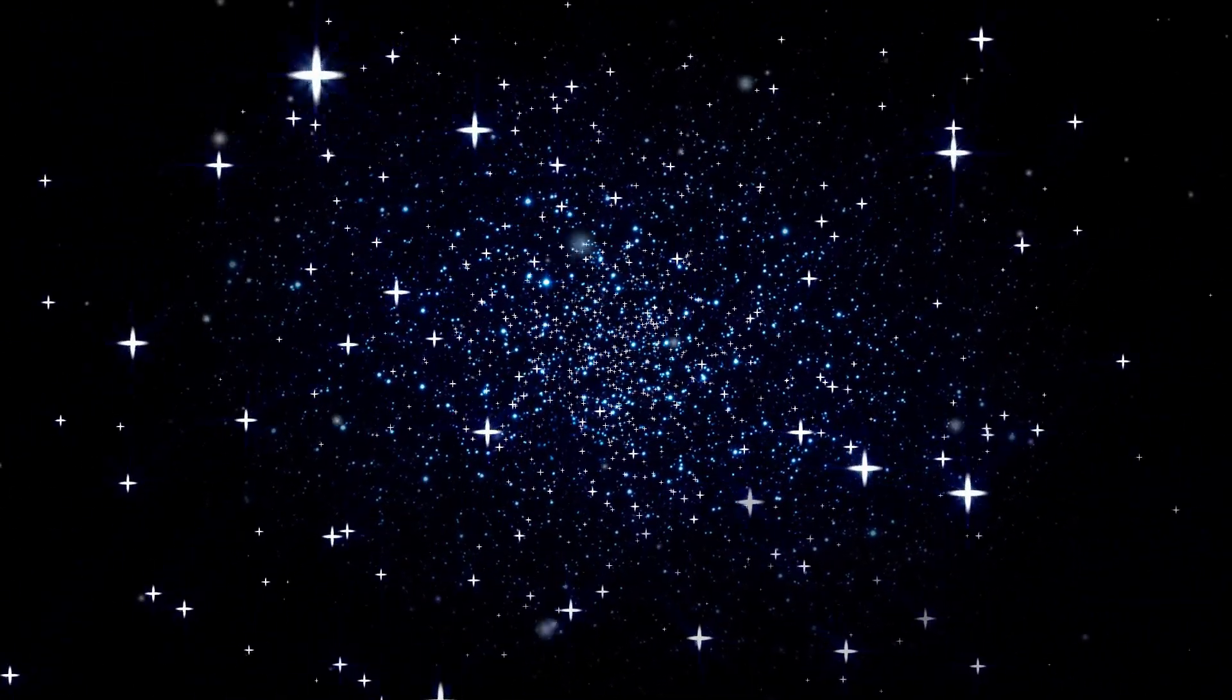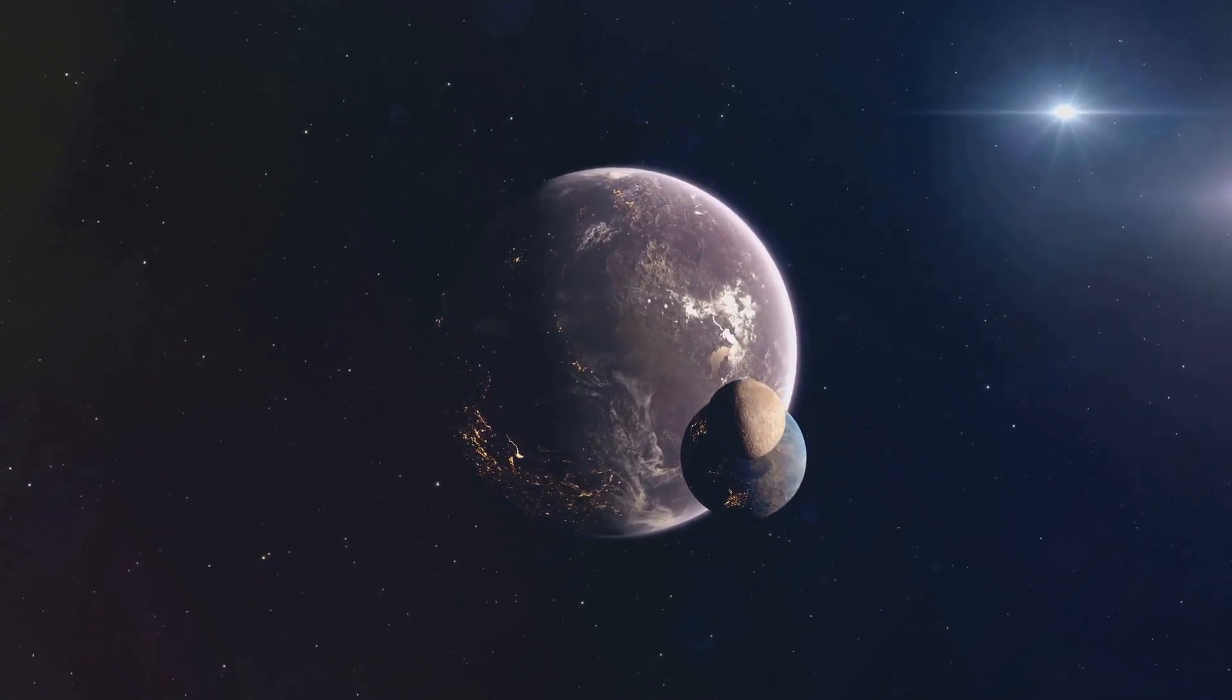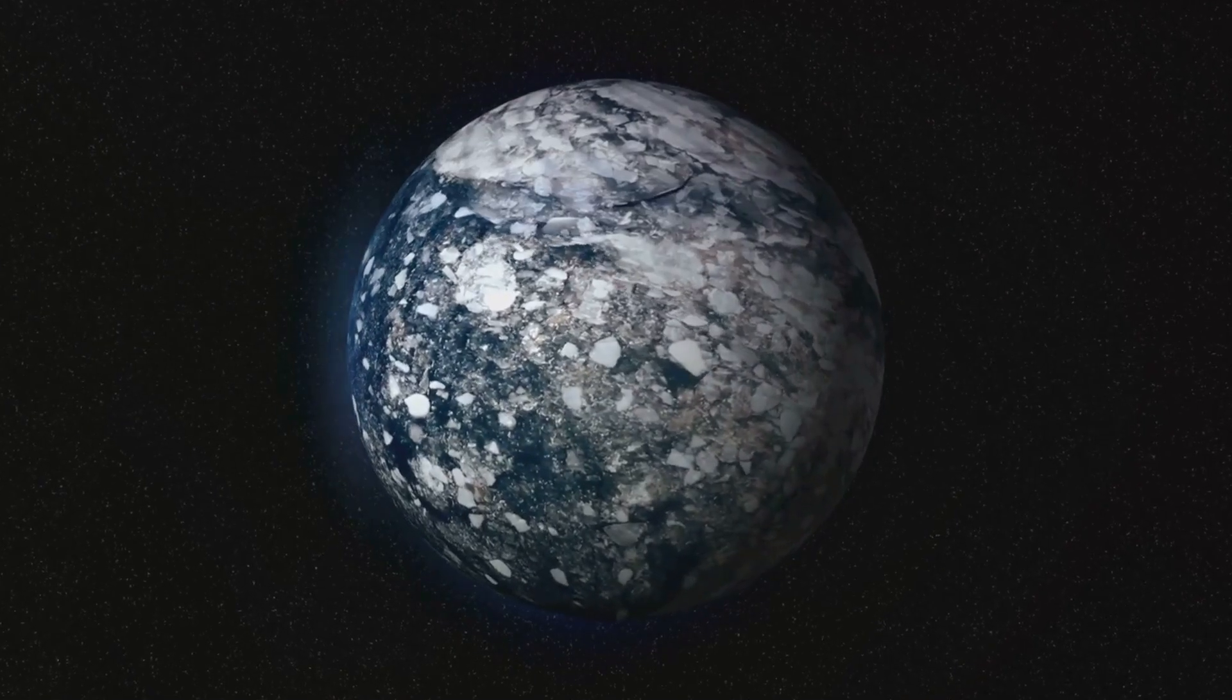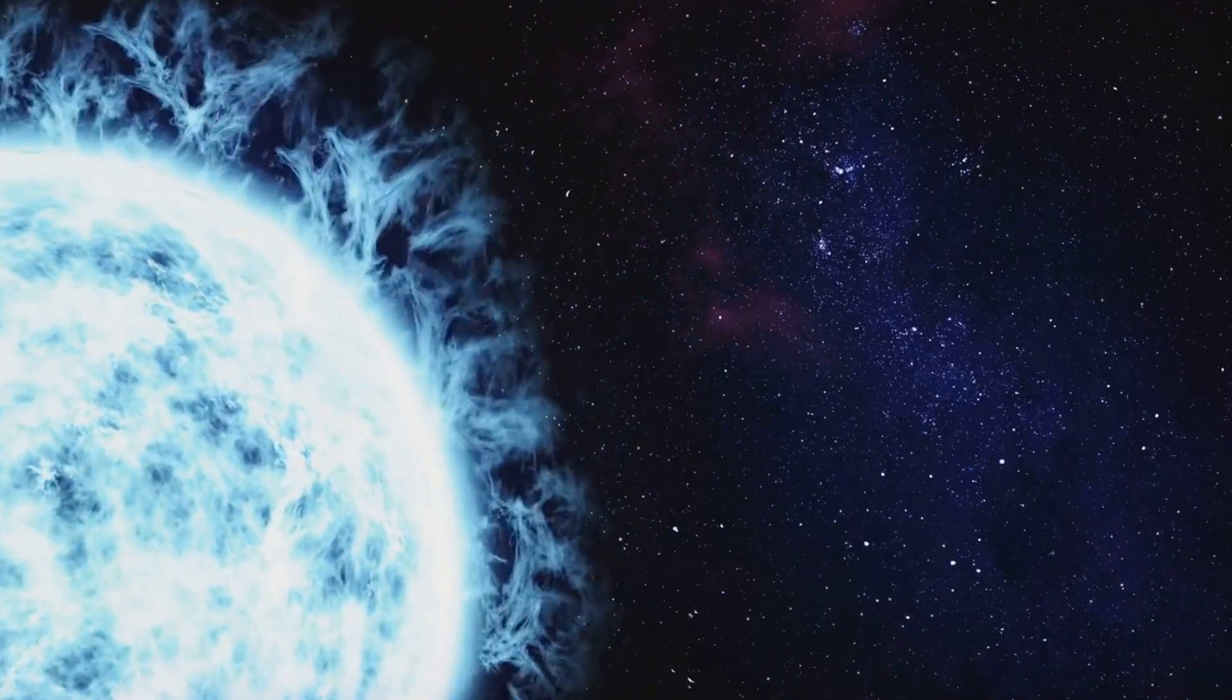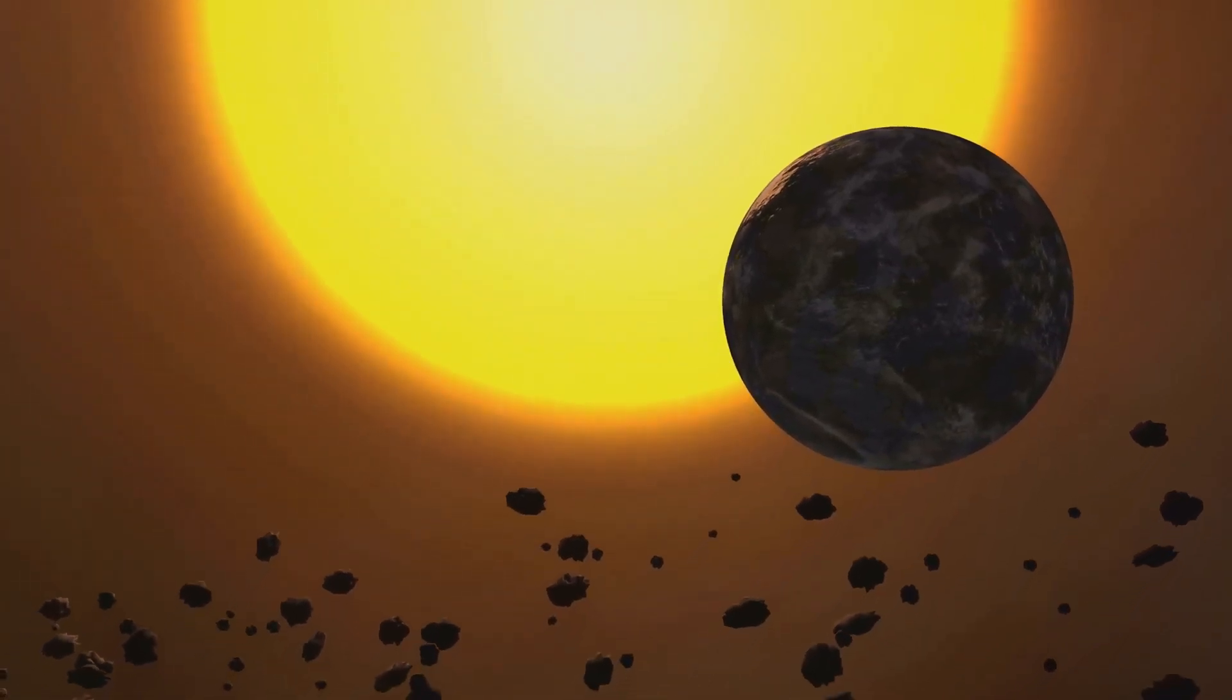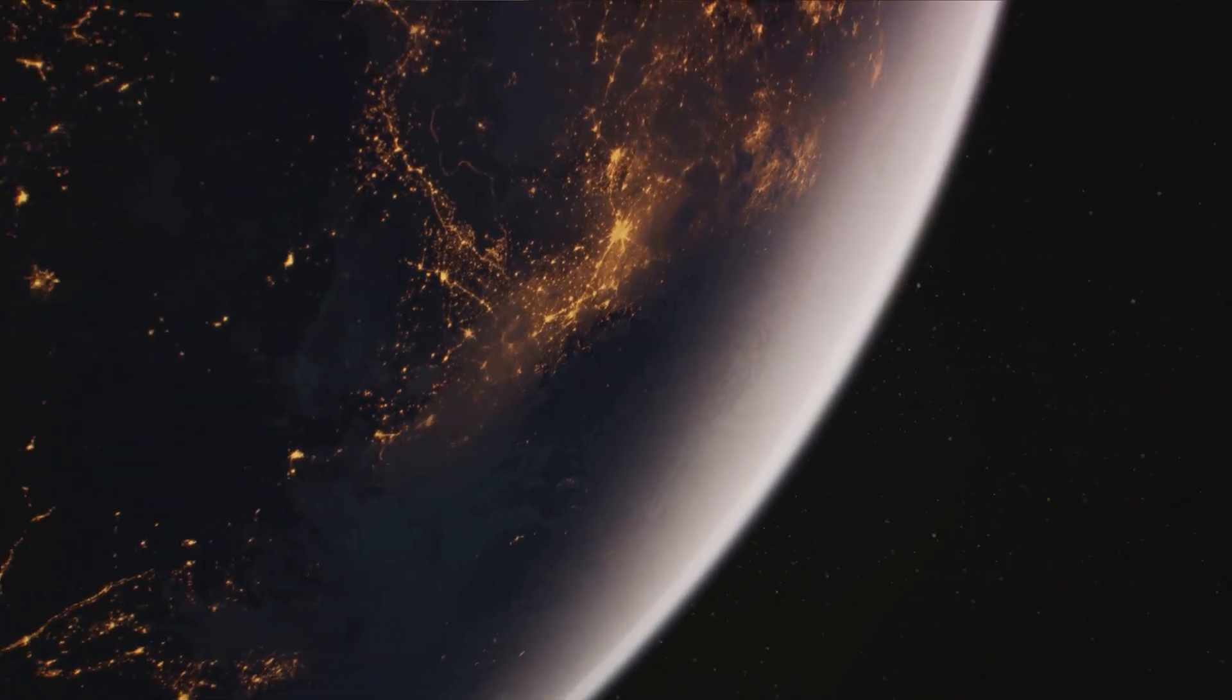But not all planets are created equal. For a planet to support life as we know it, certain conditions must be met. First, it must orbit within its star's habitable zone, the region where temperatures are just right for liquid water to exist. Too close to the star, and any water would evaporate; too far away, and it would freeze. Secondly, the planet needs to have the right kind of atmosphere. This not only provides the air that potential life forms might breathe, but also helps regulate the planet's temperature and protect it from harmful solar radiation. Finally, the planet requires a certain level of geologic activity. This can help recycle nutrients, maintain a planet's magnetic field, and even contribute to the development of an atmosphere.